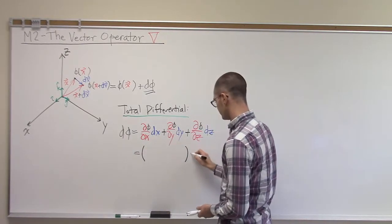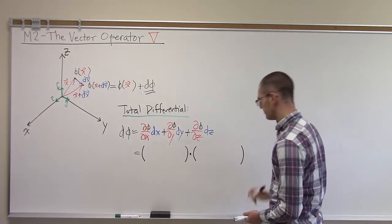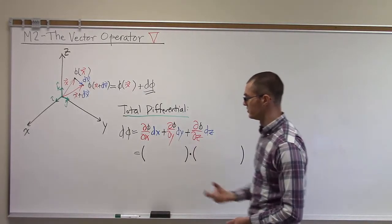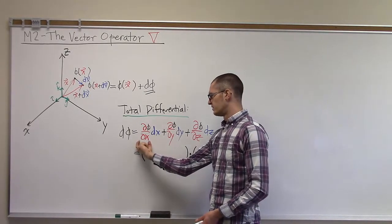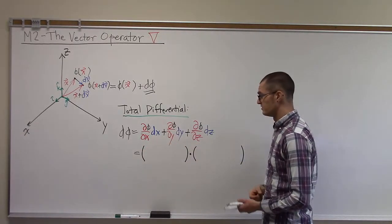So if you think back to the first video sequence on vectors and vector products, we can recognize this as a dot product between this vector d phi by dx, d phi by dy, d phi by dz.